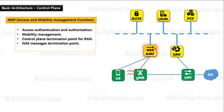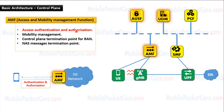First, let's learn the AMF. AMF refers to Access and Mobility Management Function. From its name, the AMF performs access management and mobility management for the UEs. The main functions of the AMF include access authentication and authorization, mobility management, control plane termination point for the RAN, and NAS messages termination point. Access authentication and authorization means that the AMF authenticates the UEs and authorizes them to access the 5G network. This is done in coordination with the AUSF and the UDM.